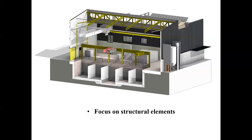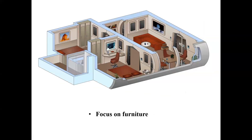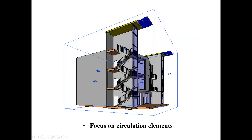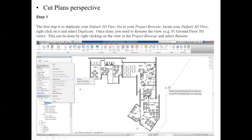Focus on structure elements — if I make a 3D section like this I'll see the truss and what the truss is supported on, and the ceiling. Focus on furniture — the furniture distribution shown in 3D interior view. For example, if we have an elevator or a staircase which goes from one level to another level, when I make a 3D cross section like this it gives me focus on those circulation elements.